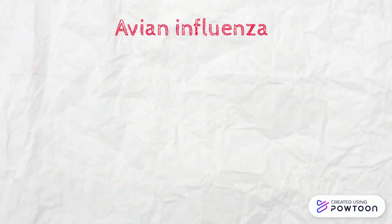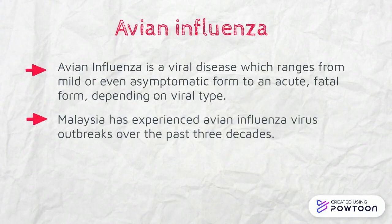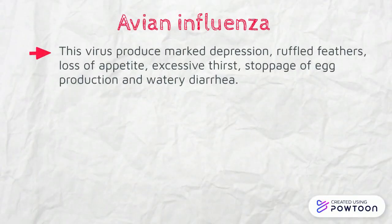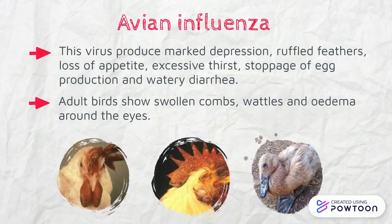The next vector disease comes from avians or wild birds. One of the diseases is avian influenza — a viral disease which ranges from mild or even asymptomatic form to an acute fatal form, depending on the viral type. In Malaysia, we have experienced avian influenza virus outbreaks over the past three decades. This virus also affects poultry, producing depression, ruffled feathers, loss of appetite, excessive thirst, stoppage of egg production, and watery diarrhea. For adult birds, they show swollen combs, spots, and edema around the eye.